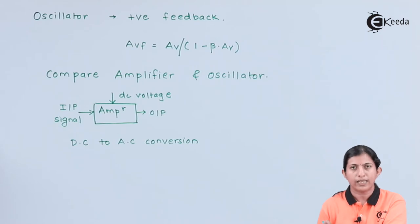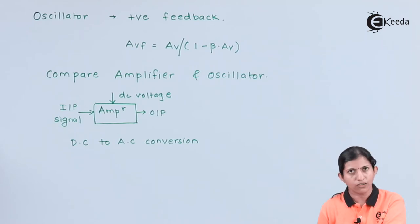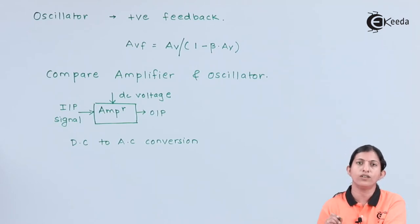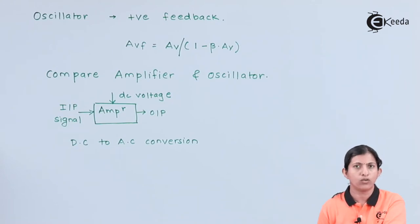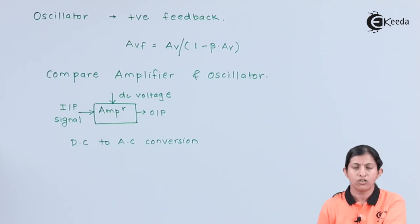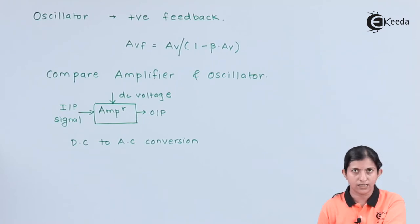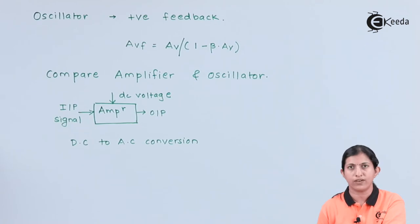The output of an amplifier always has a frequency equal to the frequency of the input signal. If there is no input, then there is no output produced in the amplifier. So an input signal is necessary in the amplifier circuit.